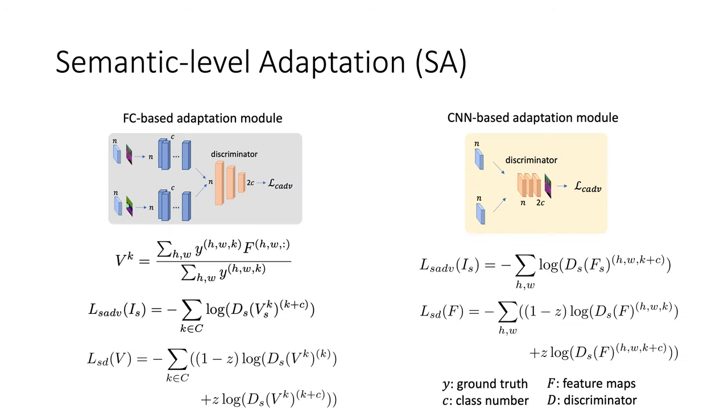We designed two structures for the semantic level adaptation. The FC-based one averaged the intra-class feature vectors for adversarial training. The CNN-based one performs the adversarial training in pixel level.